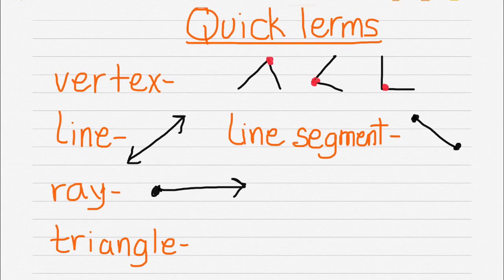A triangle has three sides and three vertices.